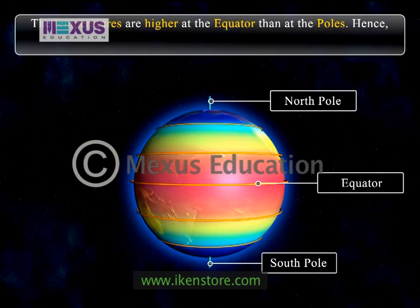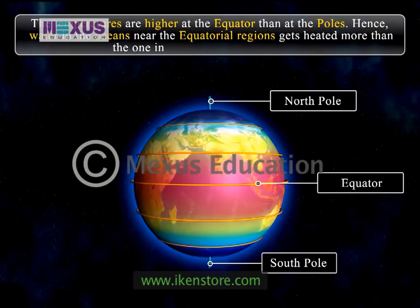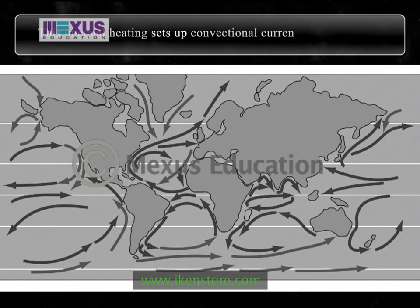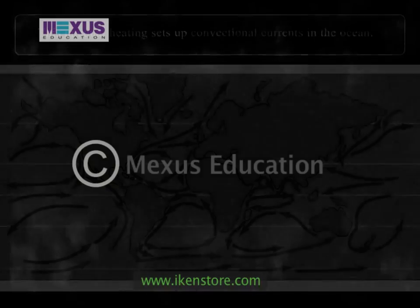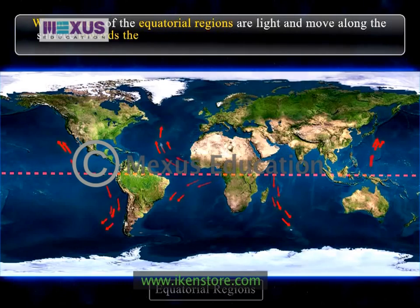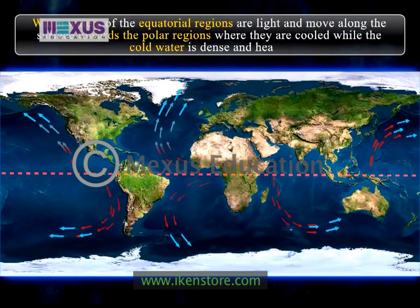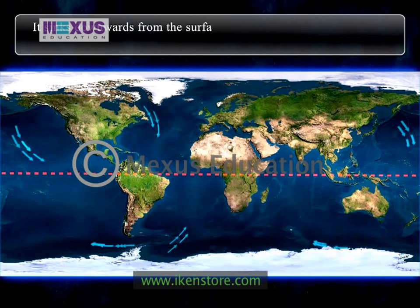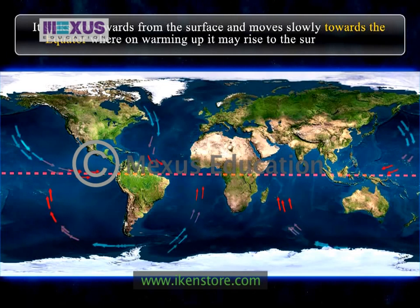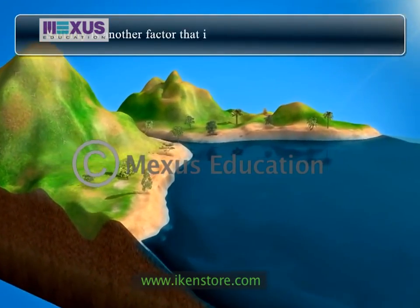Temperatures are higher at the equator than at the poles, so water in the oceans near the equatorial regions gets heated more than that near the poles. This unequal heating sets up convection currents in the ocean. Warm waters of the equatorial regions are light and move along the surface towards the polar regions, where they cool. The cold water, being dense and heavy, sinks downwards and moves slowly towards the equator, where on warming up it may rise to the surface again.